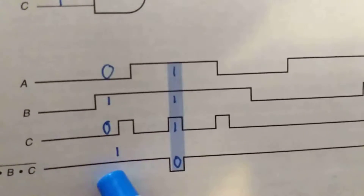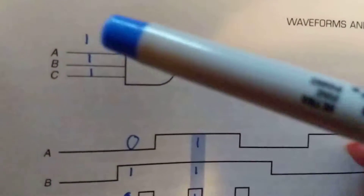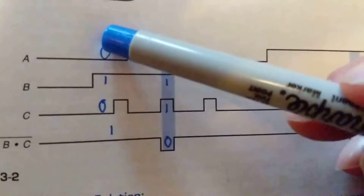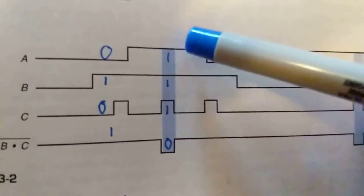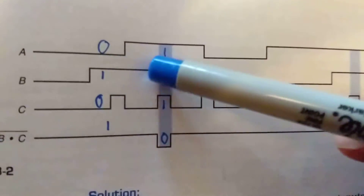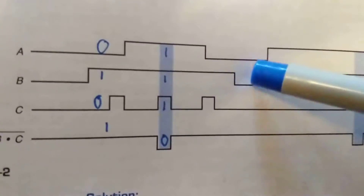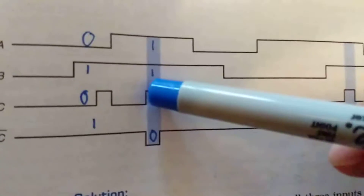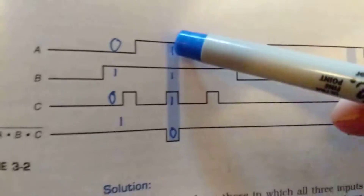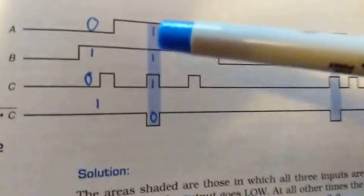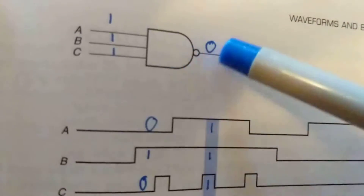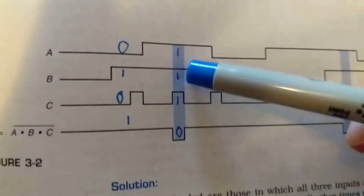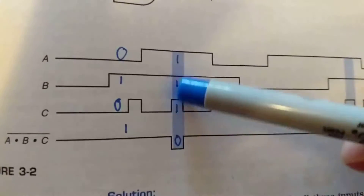With this waveform, we know we need all ones to give us a zero. At this part of the waveform: this was a zero, went to a one — right now it's a one. This is a one, stayed a one. This was a zero, now went to a one. So A, B, C at this point are all ones. Therefore the output — with the bubble — is zero. One, one, one, one gives us a zero.